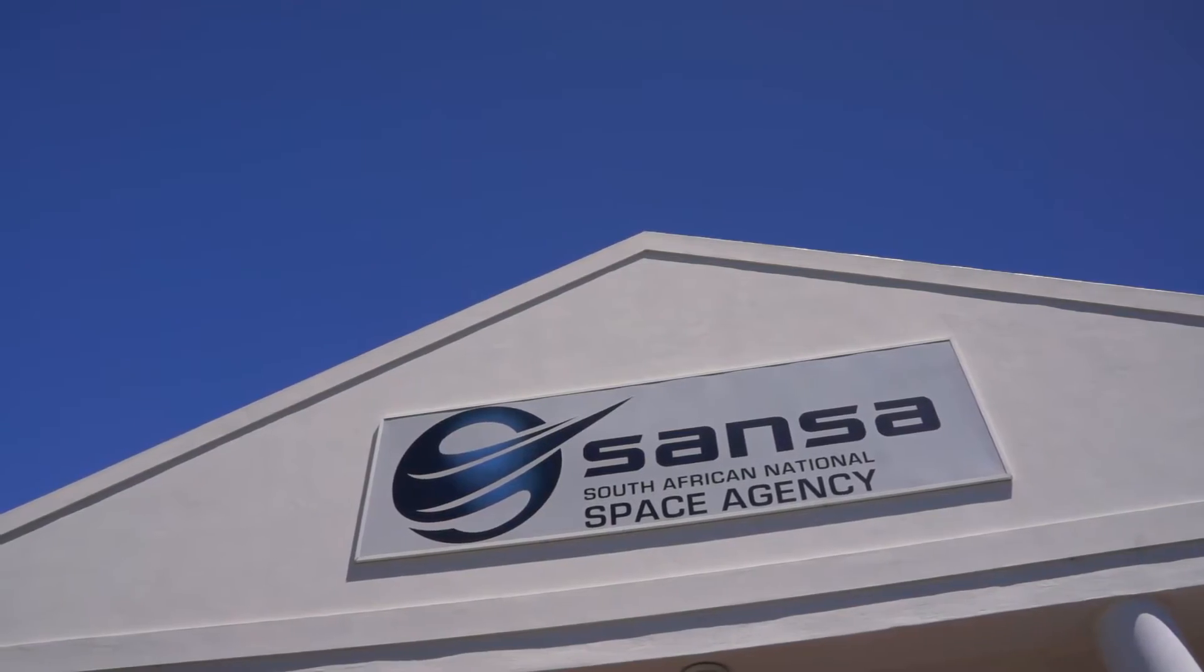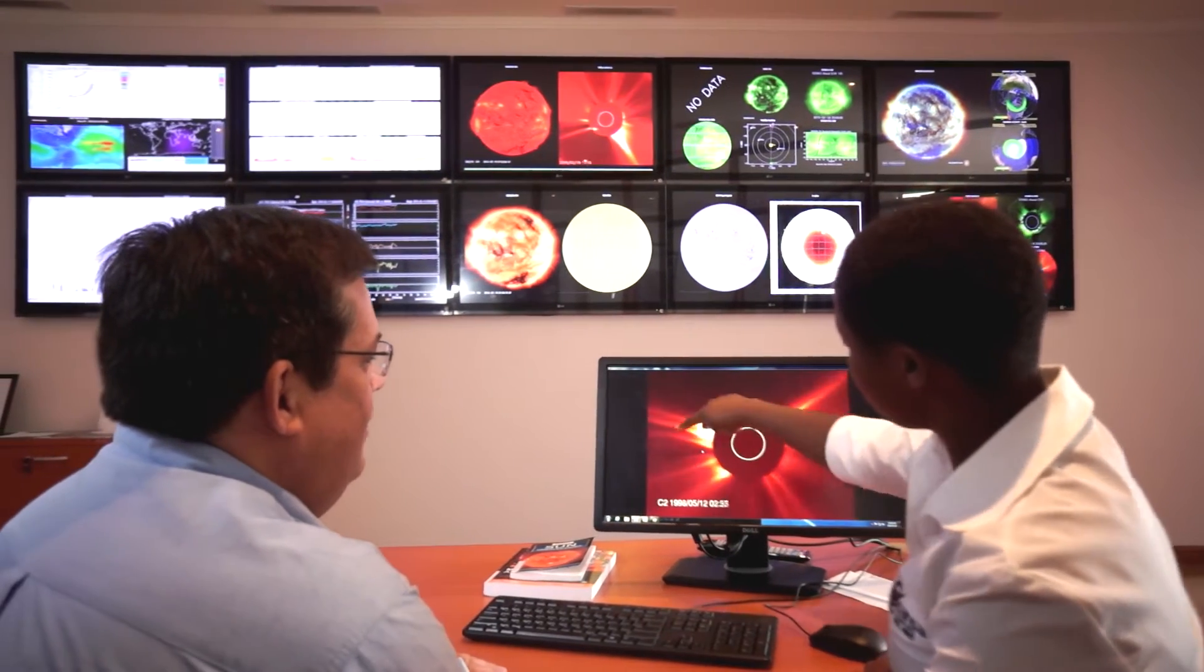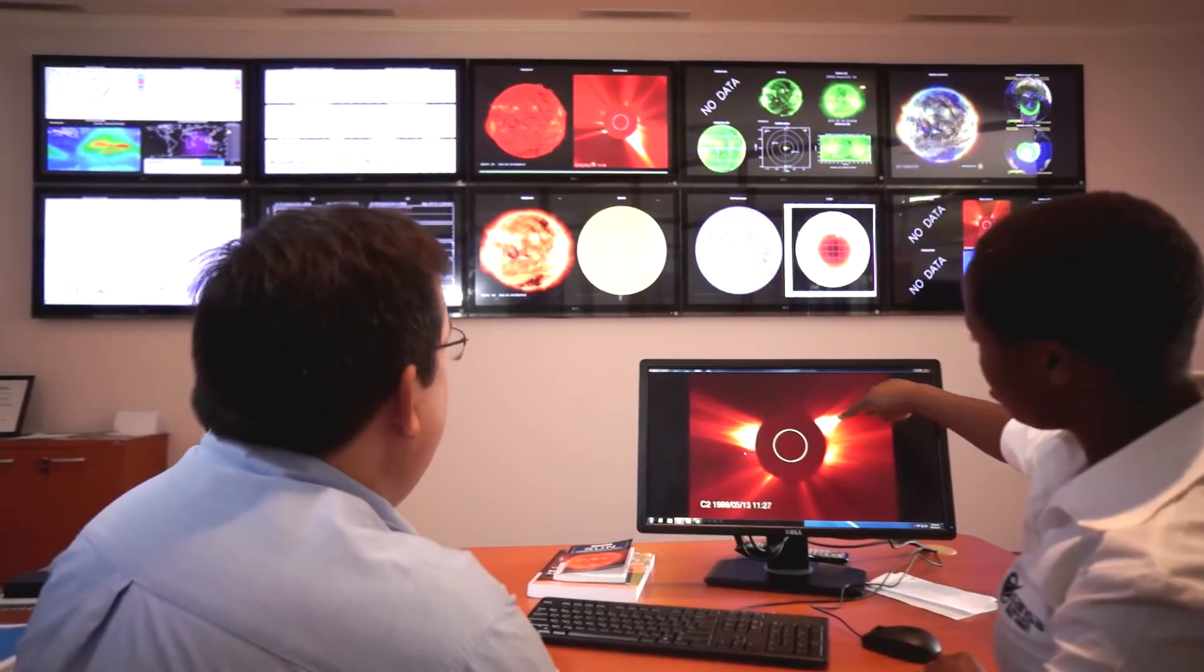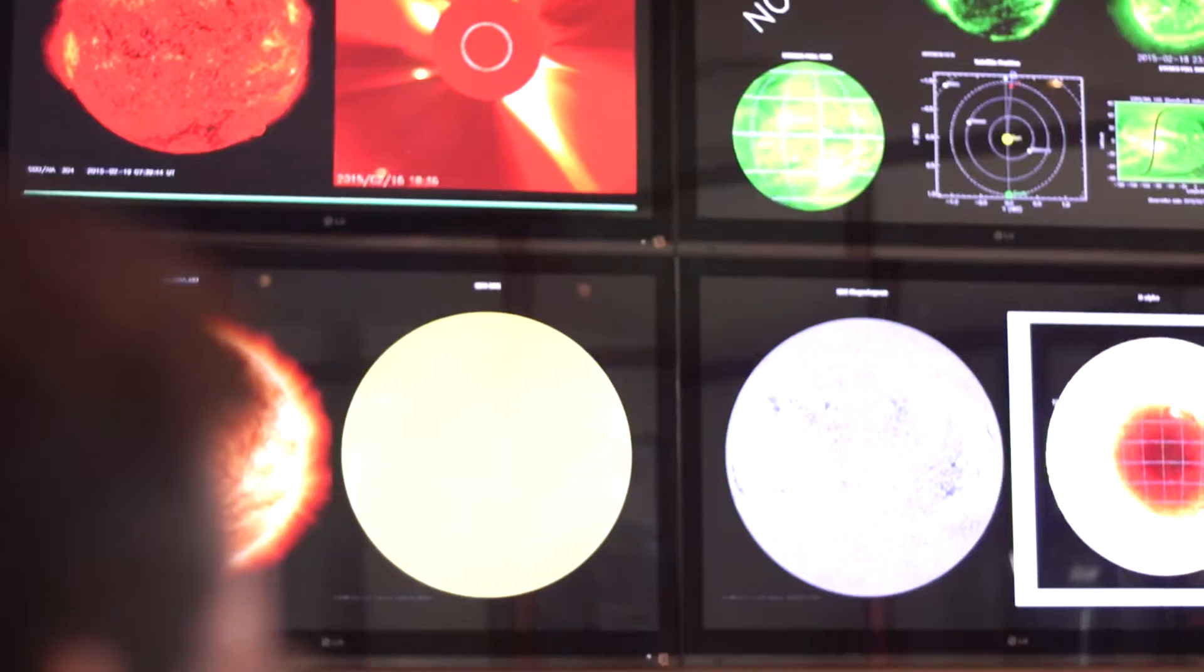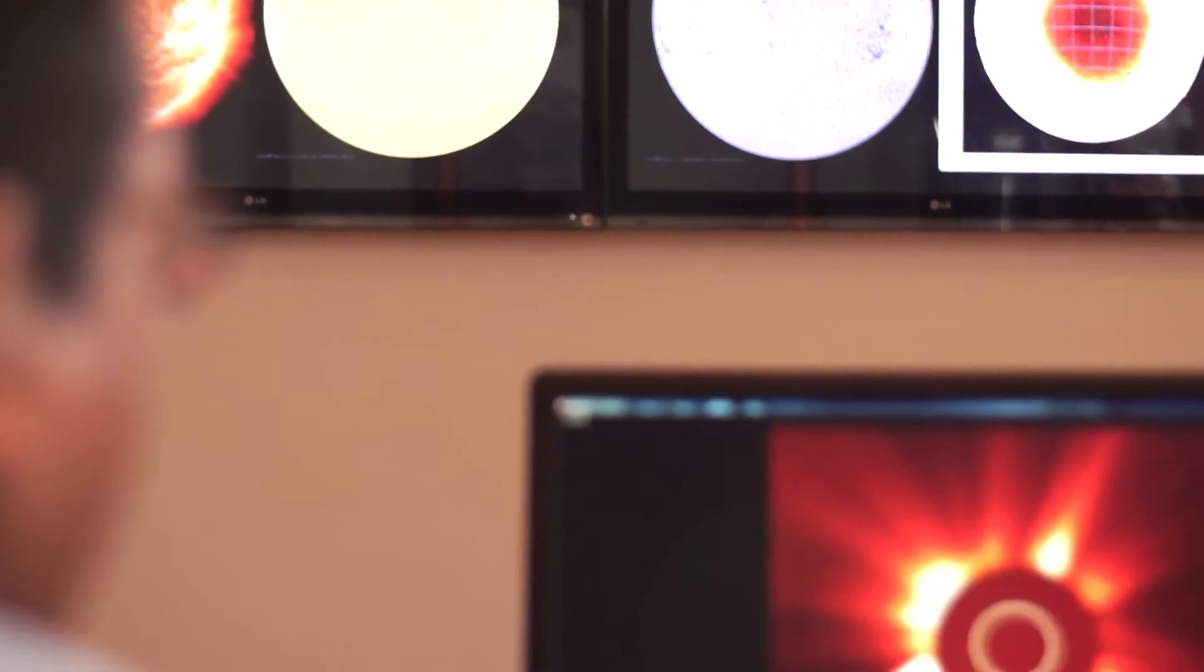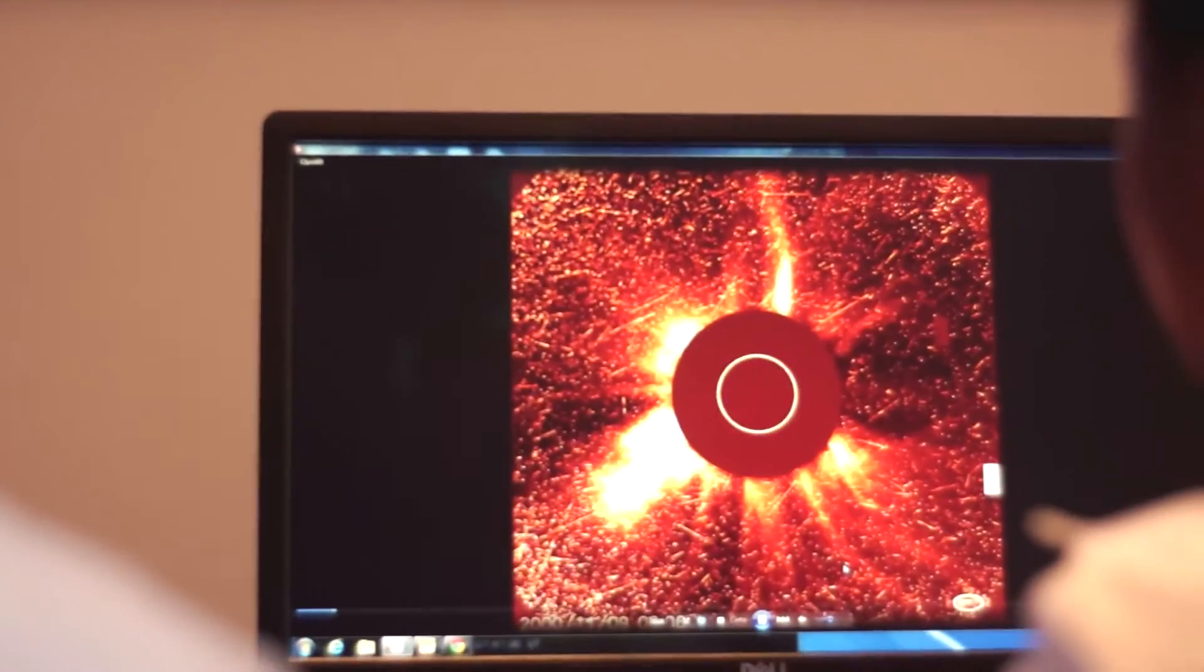The South African National Space Agency plays a key role in monitoring space weather, and is part of the worldwide network of magnetic observatories. The facility in Hermanus is responsible for research, infrastructure and data used to monitor the near-Earth space environment.